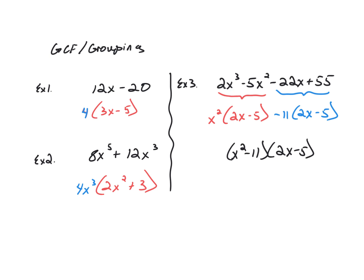Now let's look at grouping, which also uses greatest common factor. This polynomial has four terms in descending order: x cubed, x squared, x, and the constant. We group the first two terms and take out the greatest common factor, which is x squared. Factoring out x squared leaves 2x minus 5. Then in the other two terms, negative 22x and plus 55, we factor out negative 11 — since 11 goes into both 22 and 55 — which also leaves 2x minus 5. So the final factored form is (x squared minus 11)(2x minus 5). That is factoring by grouping.